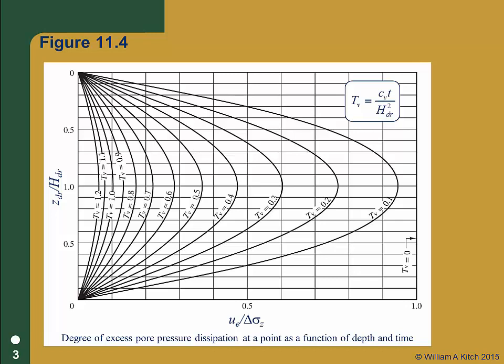In our previous modules on the rate of consolidation, we solved Terzaghi's 1D consolidation theory and used this solution to determine how excess pore pressure can change at points within a consolidating layer. This is valuable information, but it doesn't answer some important questions our clients need to know — questions related to the rate of settlement. Questions like: how much settlement will occur a year after construction? Or when will the consolidation be done? These are clearly key questions to be answered, so let's answer them.